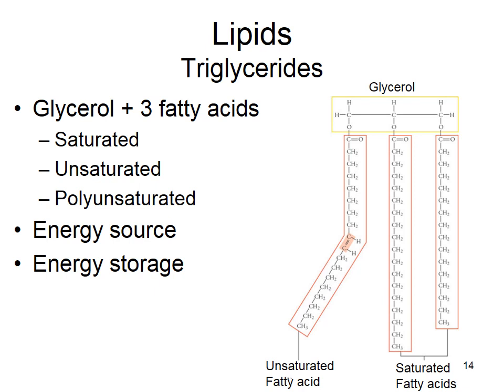Triglycerides consist of a glycerol molecule and three fatty acids. Fatty acids can be saturated, unsaturated, or polyunsaturated. Saturated means each carbon is saturated with two hydrogens; because they're saturated, the chains are stiff and straight, and saturated fats are solid at room temperature.